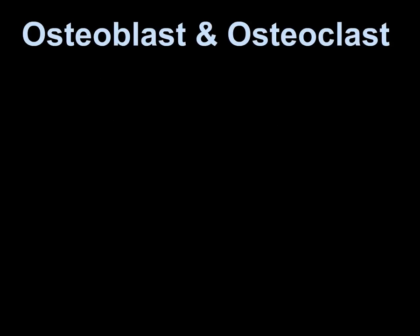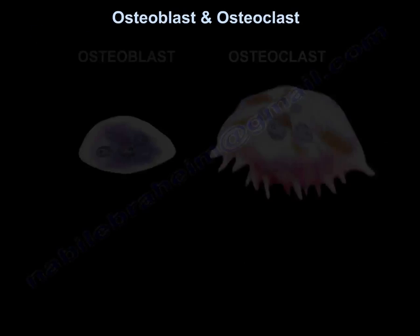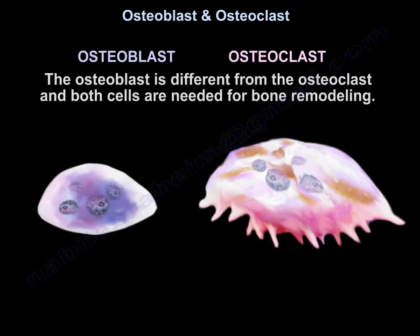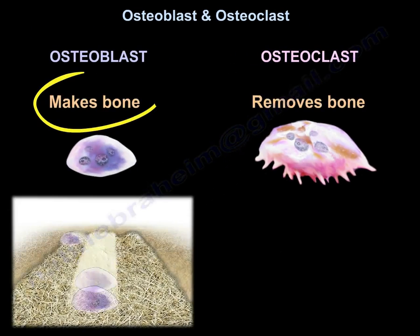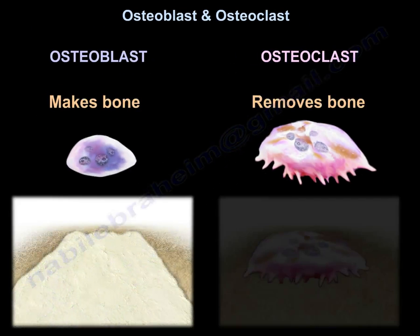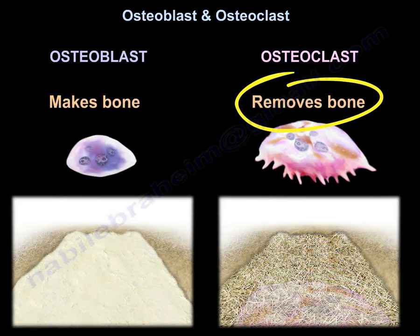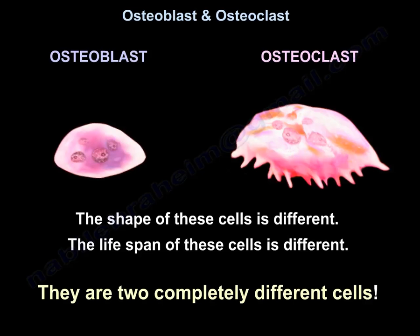Osteoplast and Osteoclast are different from each other. Both cells are needed for bone remodeling — Osteoplast makes bone, Osteoclast removes bone. The shape and life span of these cells are different. They are two completely different cells.